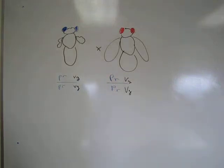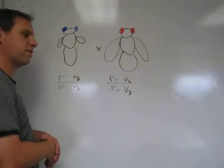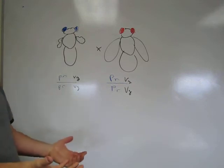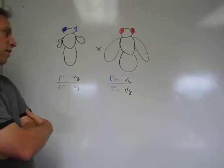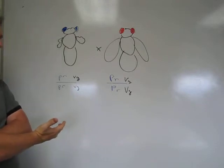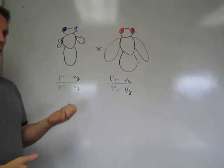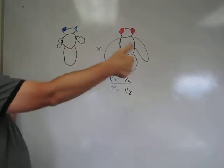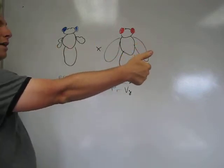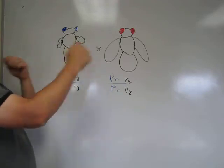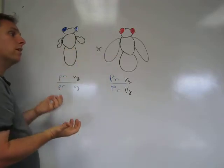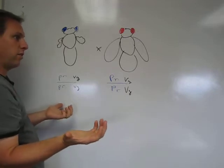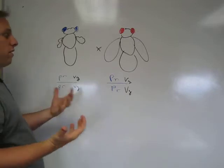Now we're going to get to linkage. In the case of linkage, the different alleles of the different genes do not segregate independently from one another. The reason they do not segregate independently is because they're stuck on the same chromosome — they can't go their separate ways. The way one allele segregates influences the way another allele segregates because they're stuck on the same chromosome.